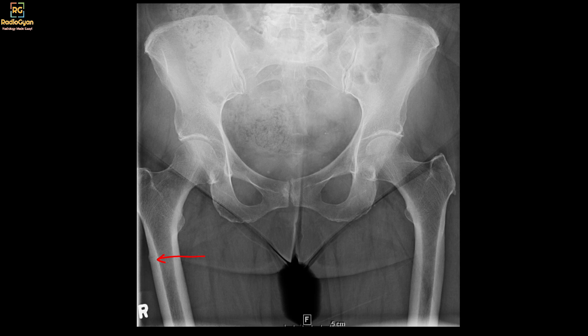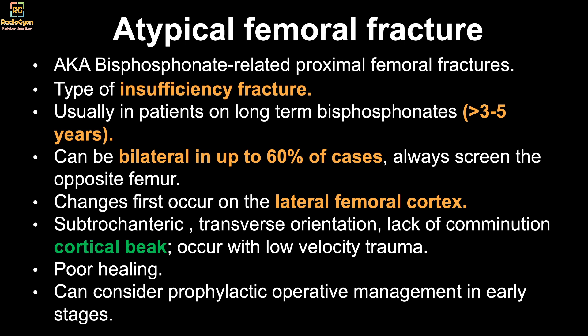The problem with these fractures is that they don't have good healing. Atypical femoral fractures are also known as bisphosphonate-related proximal femoral fractures. They are a type of insufficiency fracture, usually seen in patients on long-term bisphosphonates, typically more than three to five years. One important caveat is that they are bilateral in up to 60% of cases, so always screen the other femur for a bilateral fracture.